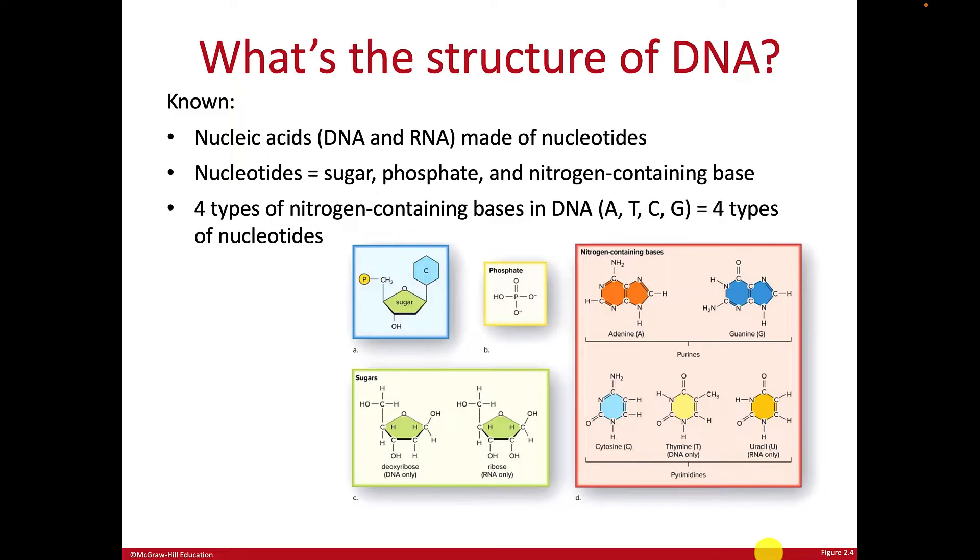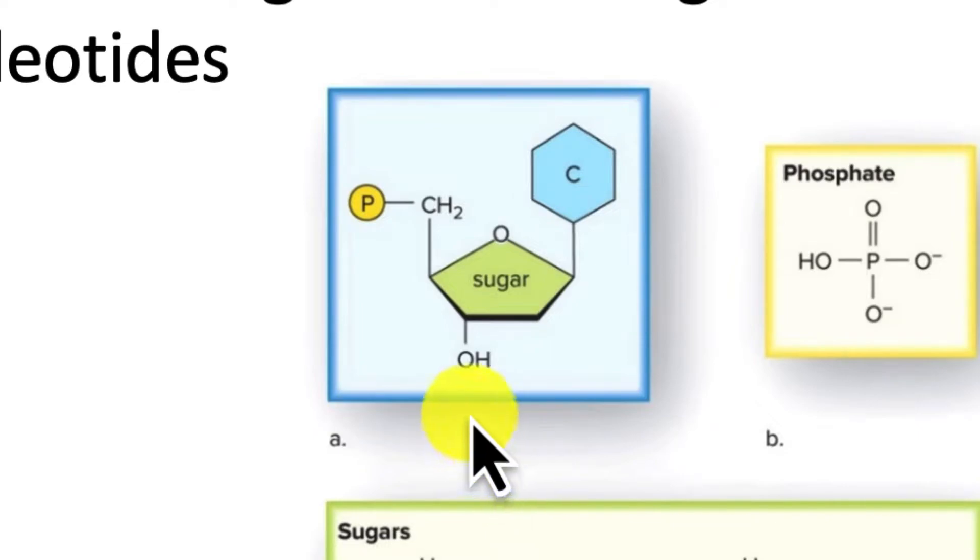Before this point, it was known that DNA and RNA were made of nucleotides. And just to recall, a nucleotide is made up of a sugar, it's a five carbon sugar, attached to a phosphate group, this P, attached to this group they've marked in C here, which is the nitrogen-containing base.